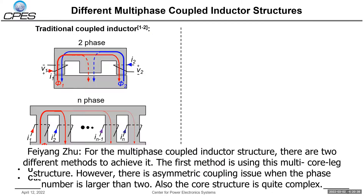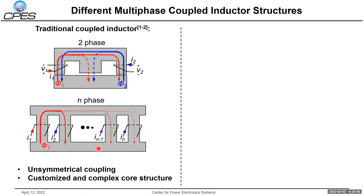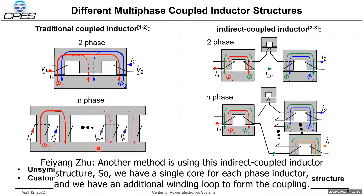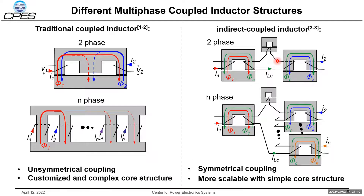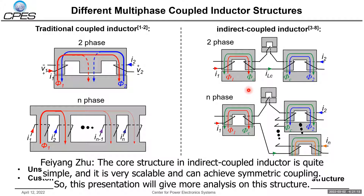For the multi-phase coupling inductor structure, there are two different methods. The first is using a multi-core structure; however, there is an imbalance of coupling issue when the phase number is larger than two, and the core structure is quite complex. Another method is using the indirect coupling inductor structure, where we have a single core for each phase inductor and an additional winding loop to form the coupling. The core structure of the indirect coupling inductor is quite simple, very scalable, and achieves symmetric coupling.